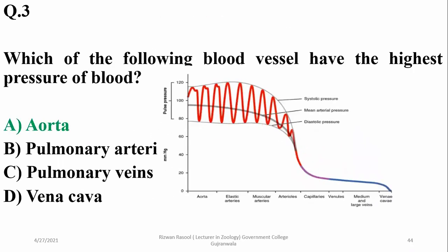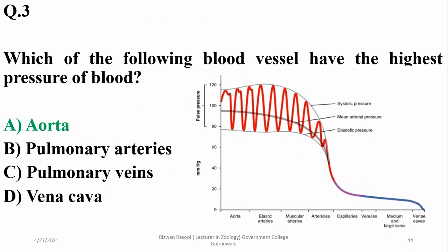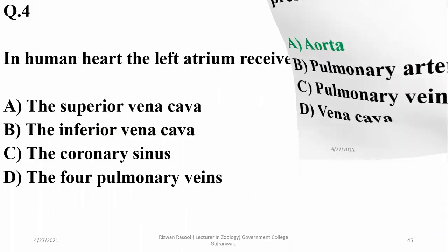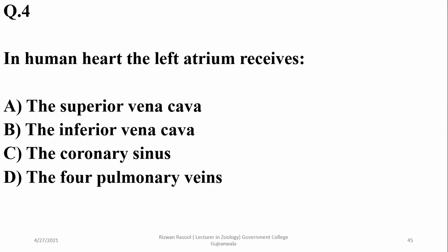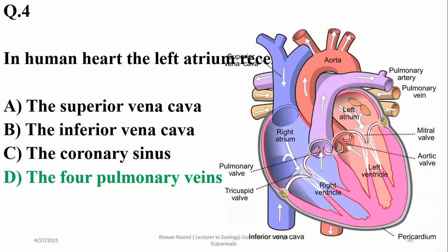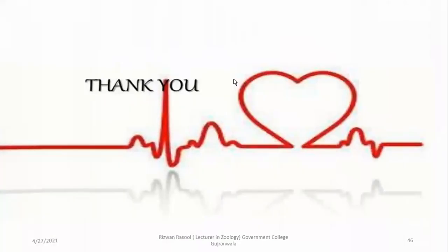Which blood vessel has the highest pressure of blood? It is the aorta, as observed in the previous question. In the human heart, the left atrium receives four pulmonary veins — two coming from the right lung and two from the left lung. That concludes the discussion of the circulatory system and its important questions with reference to the NMDCAT 2021 paper.